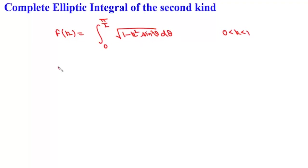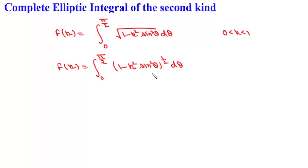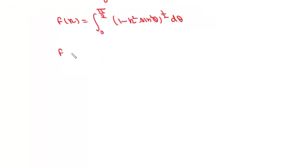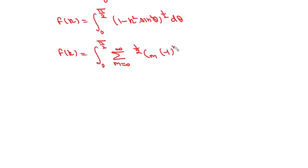We write this as E(k) equals the integral from 0 to π/2 of (1 minus k² sin²θ)^(1/2) dθ, and we will write it in binomial expansion form. So we can write E(k) as the integral from 0 to π/2 of the summation over m from 0 to infinity of C(1/2, m) times (−1)^m times k^(2m) times sin^(2m)θ dθ.